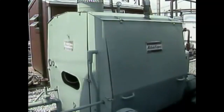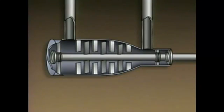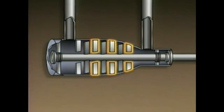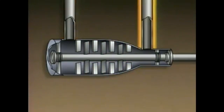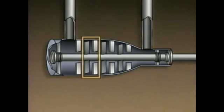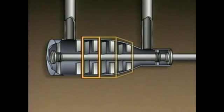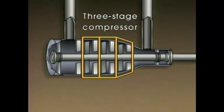As shown in this simplified illustration, an axial compressor's main parts typically include a shaft, bearings, seals, rotating blades, stationary blades, a suction line, and a discharge line. Each set of rotating blades followed by a set of stationary blades is called a stage. This compressor has three sets of rotating and stationary blades, so it can be called a three-stage compressor.